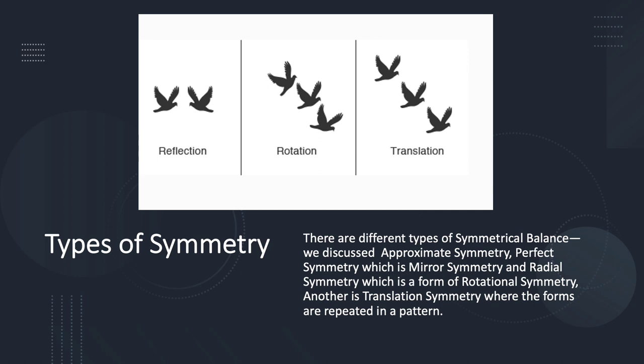Here's an example of three different types of symmetry: you have reflection, where things are identical on either side of your axis; rotation, where your forms rotate around a point, which is similar to radial design but here we have an irregular rotation around a point; and then translation, where you have a regular repetition of your elements.